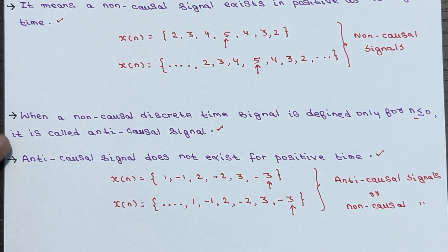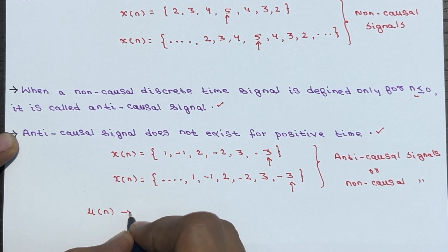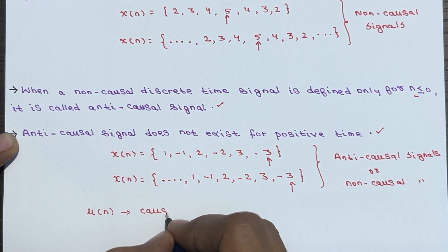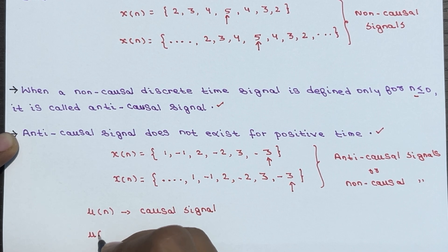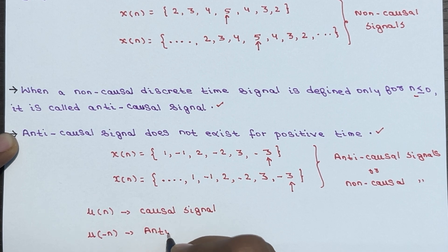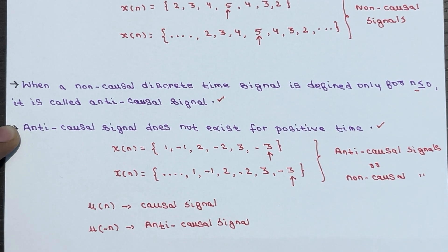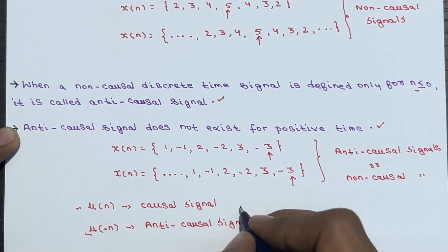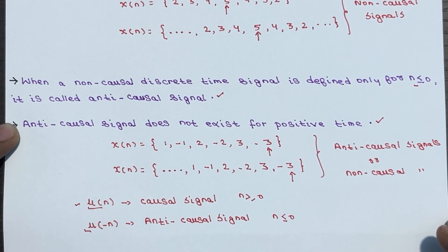The signal u of n is an example of a causal signal, whereas the signal u of minus n is an example of an anti-causal signal. This is because u of n is defined for n greater than or equal to 0, and u of minus n is defined for n less than or equal to 0.